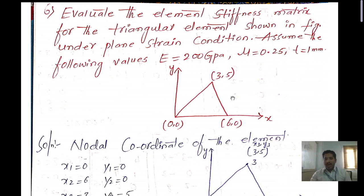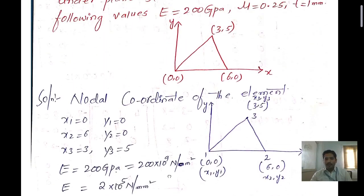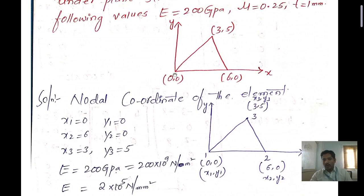If you observe this figure, we have the x-coordinate as well as the y-coordinate. This triangular element has 3 nodes. The first and second nodes are resting on the horizontal axis. The coordinates are: node 1 at x1=0, y1=0; node 2 at x2=6, y2=0; and node 3 at x3=3, y3=5.